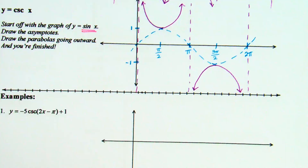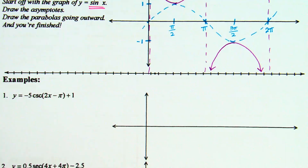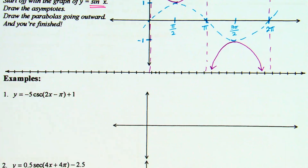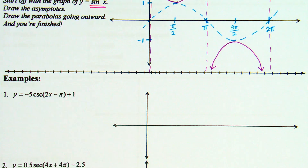Ready to try one? We'll get through whatever examples we can. It's all practicing — we're doing the same thing. It's still starting off graphing sine and cosine. So you still have to worry about your center line, your amplitude, is there a reflection, what's the period and phase shift? Do all of that with your sine and cosine, and then the very last thing is put in the asymptotes and the parabolas.